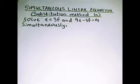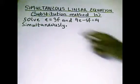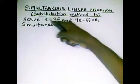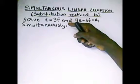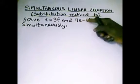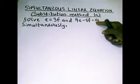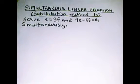We shall be looking at different examples on that substitution method. The first one on the board is: solve e equals 3f and 4e minus 5f equals 14 simultaneously.